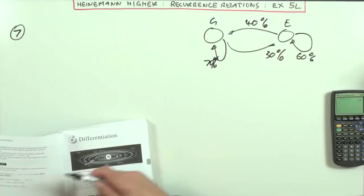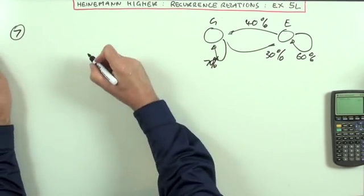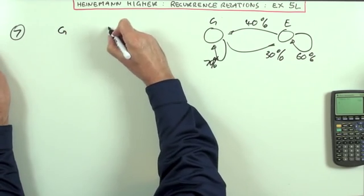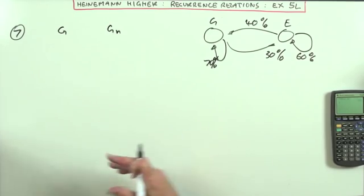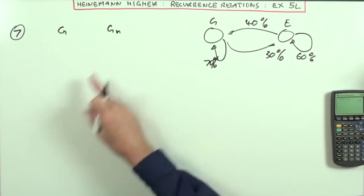It says show you've got this relationship for the number of cars that you'll end up having in Glasgow. So instead of using U for the terms, use G. If you start at any particular week,